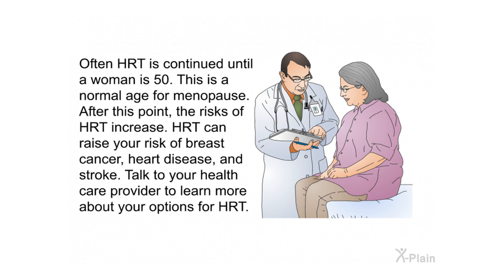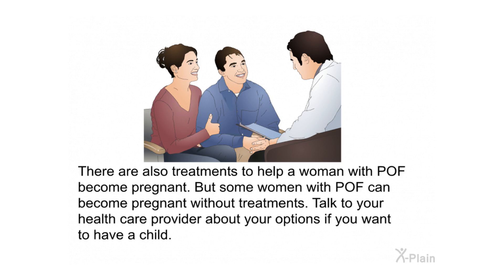Often HRT is continued until a woman is 50, which is a normal age for menopause. After this point, the risks of HRT increase, including raised risk of breast cancer, heart disease, and stroke. Talk to your health care provider to learn more about your options. There are also treatments to help a woman with POF become pregnant, though some women with POF can become pregnant without treatment.